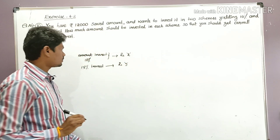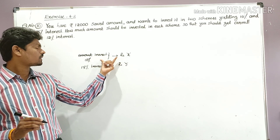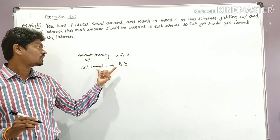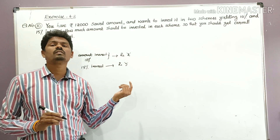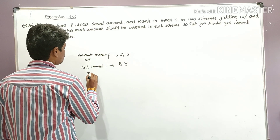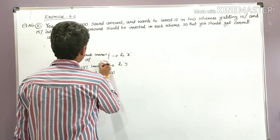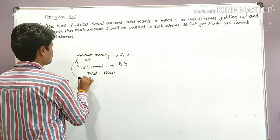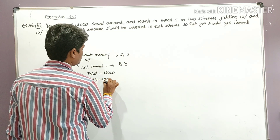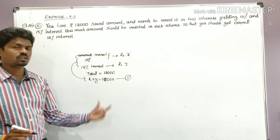Since the total amount is 12,000, the sum of the two invested amounts must equal 12,000. That is, x plus y is equal to 12,000. This is our Equation number 1.